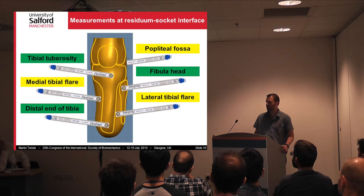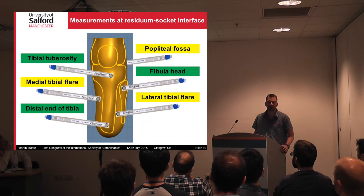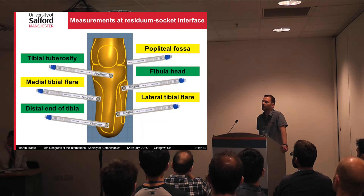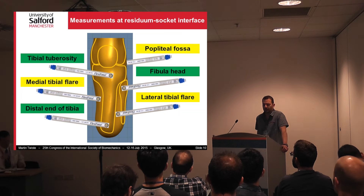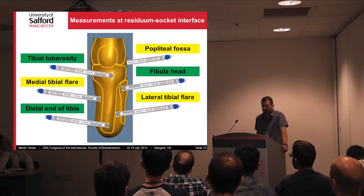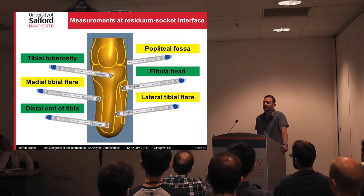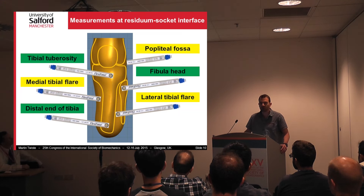Having looked at how to capture motion, we then looked at how to measure the residual-socket interface pressures. For that we used Tekscan FlexiForce sensors directly attached to the residual. A silicone roll-on sleeve was pulled over the residual, and the sleeve had a ratchet pin-lock distally to suspend the socket. The landmarks chosen were clinically relevant: the green ones are at bony prominences, generally considered pressure-sensitive, and the yellow ones are at landmarks without bony prominences, considered pressure-tolerant.